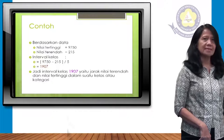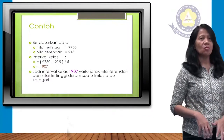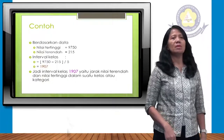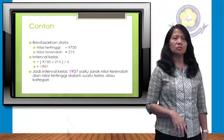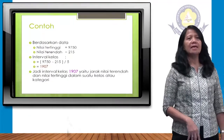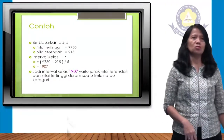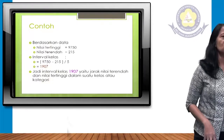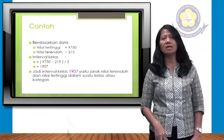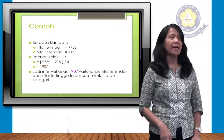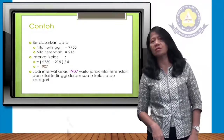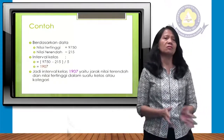Interval kelas: nilai tertinggi dikurang terendah dibagi 5. Artinya 9.750 − 215 dibagi 5, hasilnya adalah 1.907. Jadi interval kelas 1.907, yaitu jarak nilai terendah dan nilai tertinggi dalam suatu kelas atau kategori.